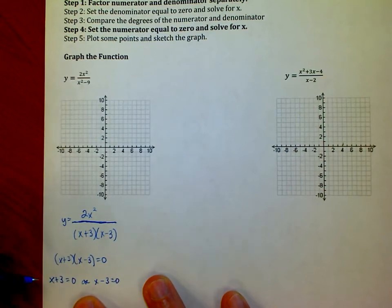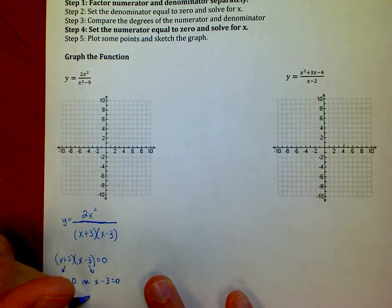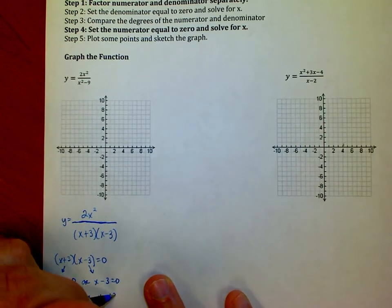I take each individual chunk that's been multiplied together and set each one individually equal to zero. That means x is either negative 3 or x is positive 3.